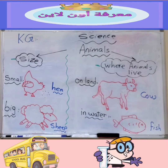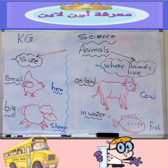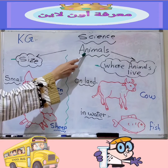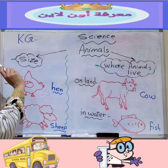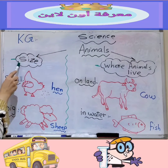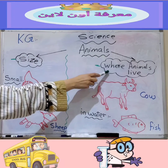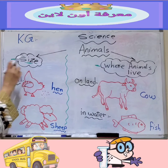Hello everybody. Welcome back for our science lessons for KG. Today we will study animals as living things. We will study two points in animals: the size of the animals and where animals live. Number one, the size of animals.